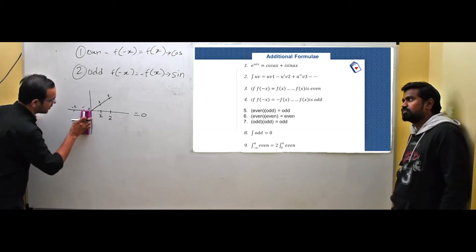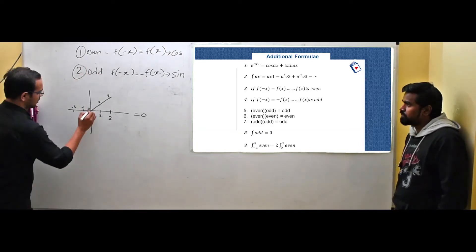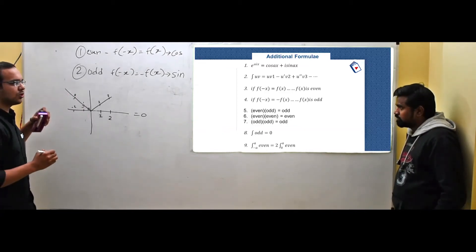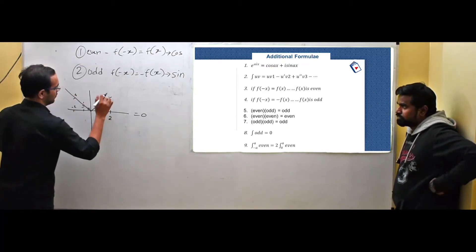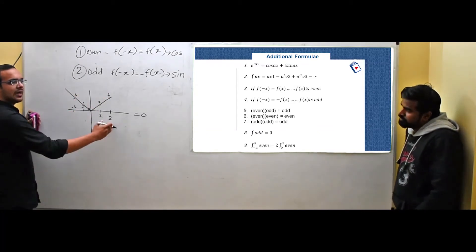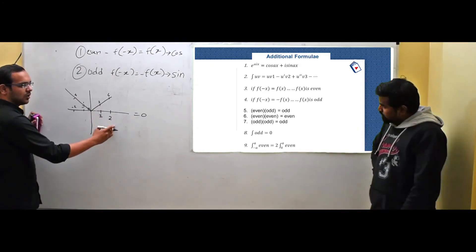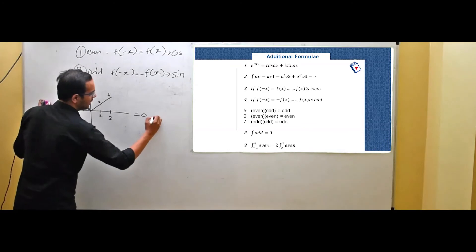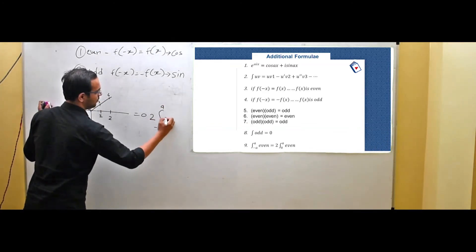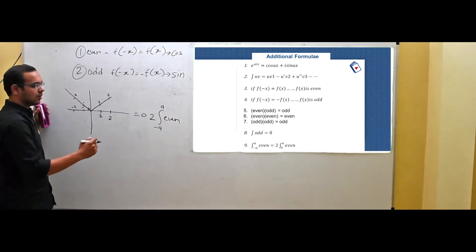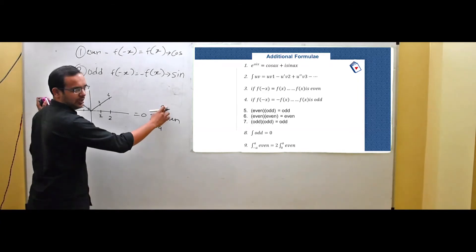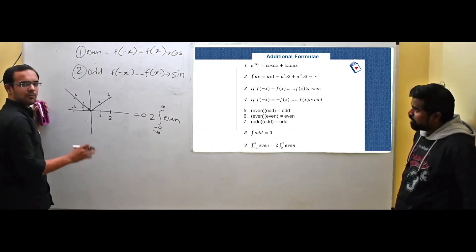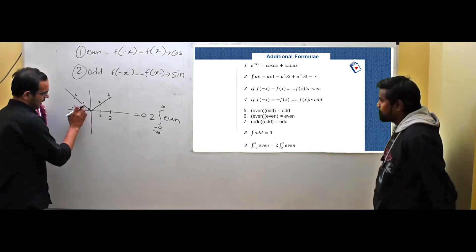Now let us consider an even function like x squared. For x equals minus 1, x squared equals 1; for x equals minus 2, x squared equals 4. So the integration of an even function from minus a to a can be written as 2 times the integration from 0 to a of the even function. The symmetry means the two halves are identical, so we just double the integral over the positive half. The limits minus a and a are important here.